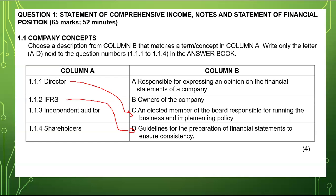An independent auditor comes to check the financial statements of the company, obtain audit evidence, and express an opinion — so that's A. A shareholder is a person or company that buys shares in a company, meaning they own the company — so that's B.